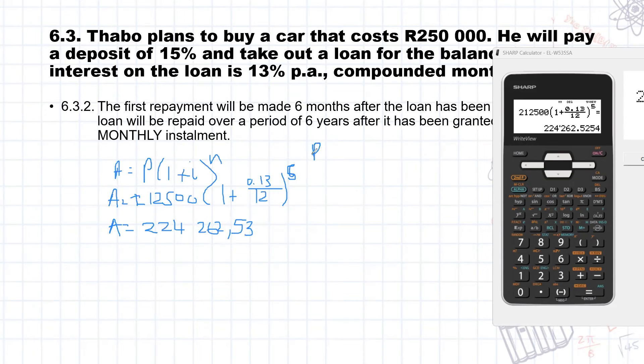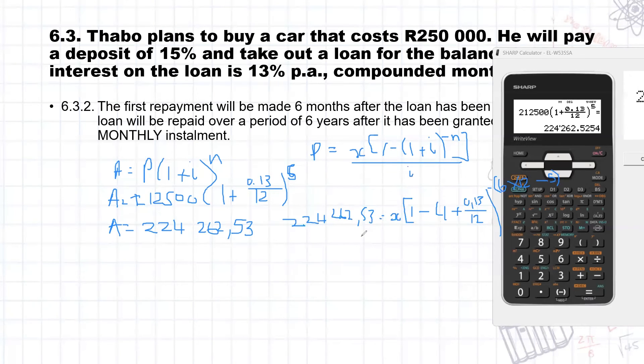Right. So now we need the present value. And again we'll just use our formula sheet to find our formula, which says X open brackets, one minus one plus I to the power of negative N, close brackets, all over I. So P is given as R224,262.53 equals, we don't know what X is, that's what we're looking for. One minus one plus I is 0.13 over 12 to the power of negative. And here your N will be six years times 12 minus the first five initial months where there weren't any X. And all of this close brackets is over I, which is 0.13 over 12.